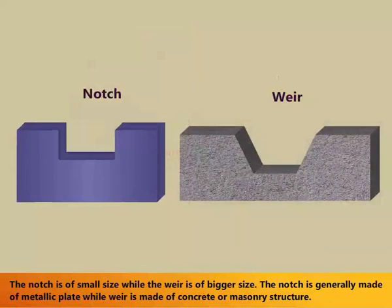The notch is of small size while the weir is of bigger size. The notch is generally made of a metallic plate, while the weir is made of concrete or masonry structure.